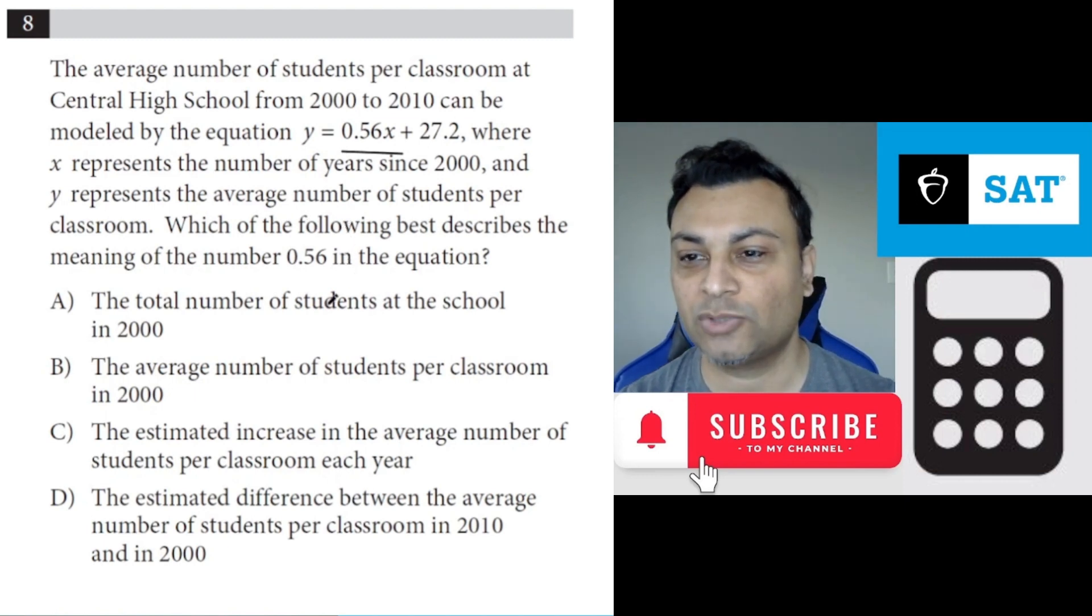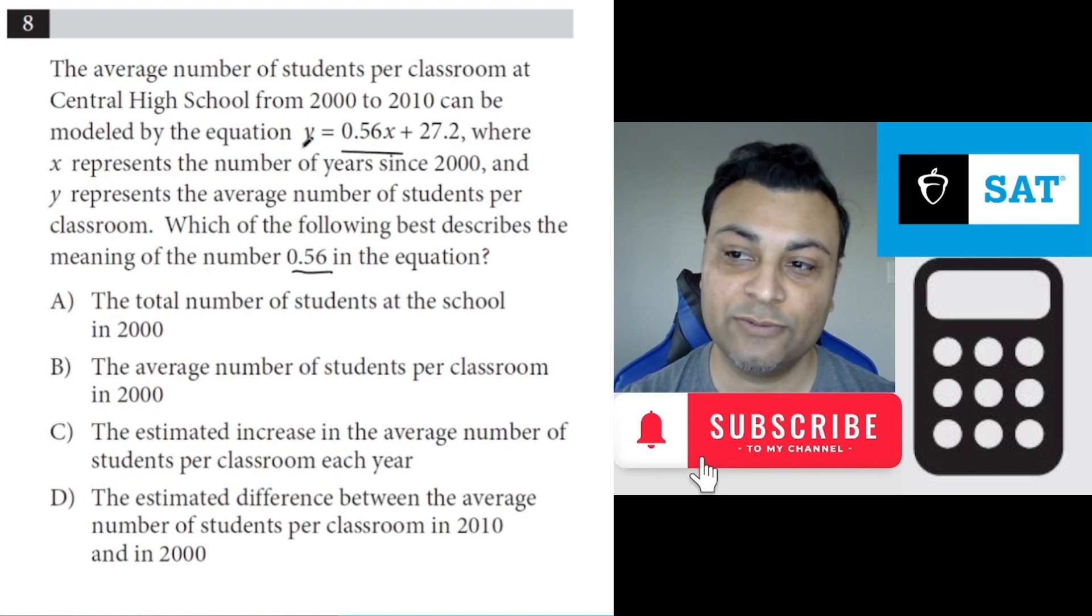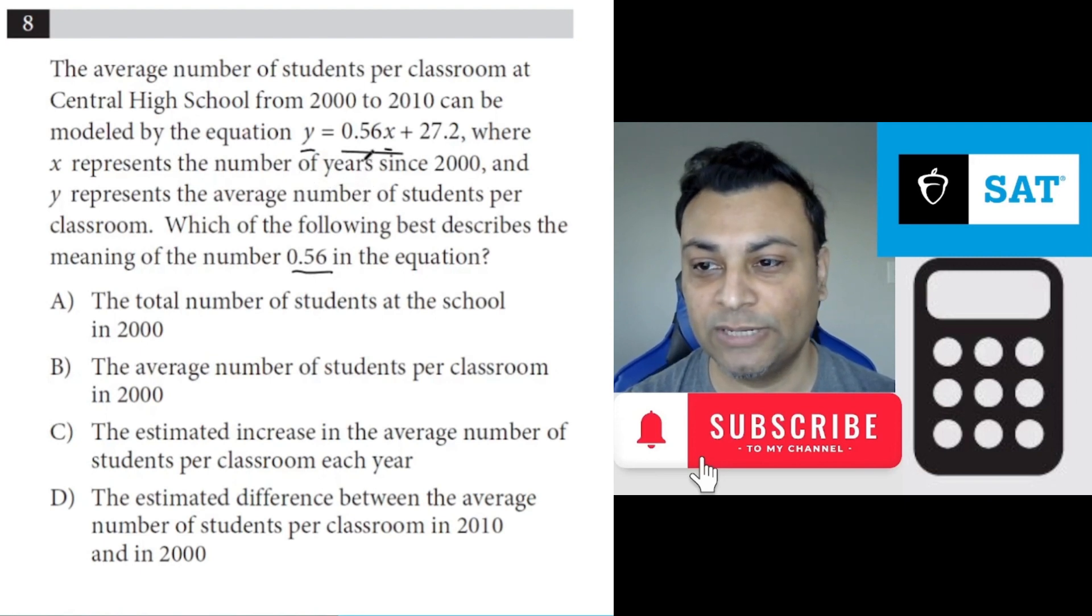Which of the following best describes the meaning of the number 0.56 in the equation? Now, 0.56 is the slope, and slope is always how does y change per x, per one unit change in x. That's the meaning of slope.